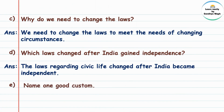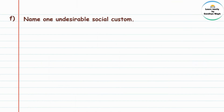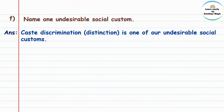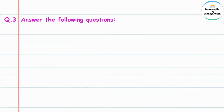Name one good custom. Answer: maintaining the balance of nature is one of our good customs. Next, name one undesirable social custom. 'Undesirable' manje anisht, 'social' manje samajik, 'custom' manje rudi. Answer: caste discrimination is one of our undesirable social customs. Name some of our social issues — 'illiteracy,' 'sway of superstitions,' 'child marriage,' and 'child labour' are some of our social issues.